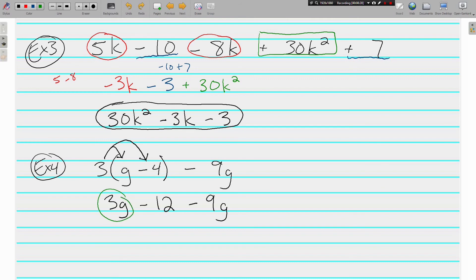We have a positive 3g and a negative 9g. 3 minus 9. The negatives are going to win by 6. And then we have a negative 12 left over. And that's as good as we can do right there. We don't know what g is, so we're all done. So when there's distributive property expressions, do that first before you start combining your like terms.